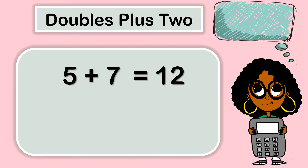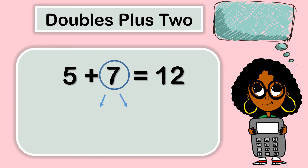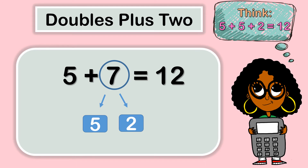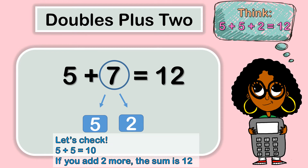Let's look at a doubles plus two example. Five plus seven equals 12. Let's pay attention to the seven — the seven will be broken apart into two digits: five and two. Remember, with doubles plus two, we are adding two more. So think like this: five plus five plus two equals 12. Let's check. Five plus five equals 10. If you add two more, the sum is 12.